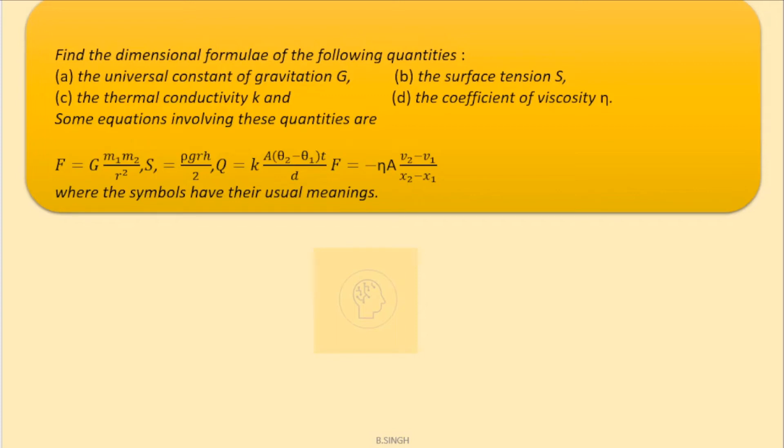The second part says find the dimensional formula of surface tension. The relation over here is given as S equals rho g r h upon 2. Now we know there is no dimensions for this 2 which is in the denominator because it's a constant. Let's figure out the dimensions of rho, g, r, h and substitute here.